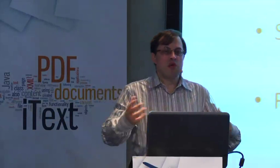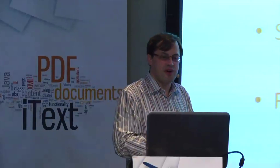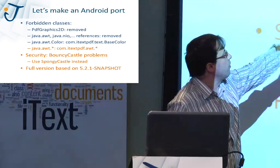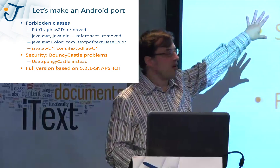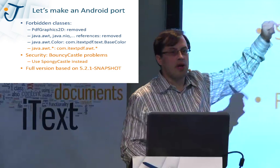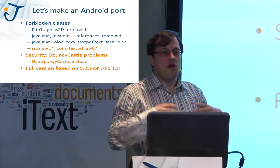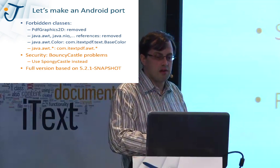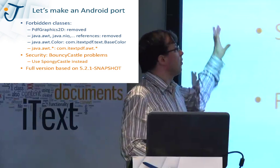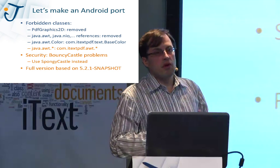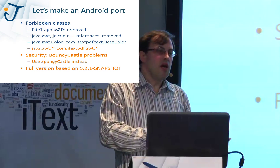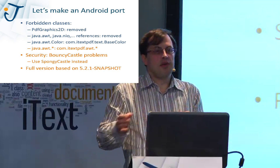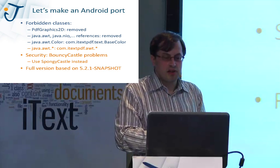We said it's really cool, we have some demos — let's make an Android port part two. For the forbidden classes, instead of throwing away the functionality — PDF Graphics 2D is gone in the Android port — but instead of throwing away things like affine transformations or Java AWT Rectangle, we replaced them with other classes. There's a project, Apache Harmony, which has an alternative for every AWT class in the Java JDK.